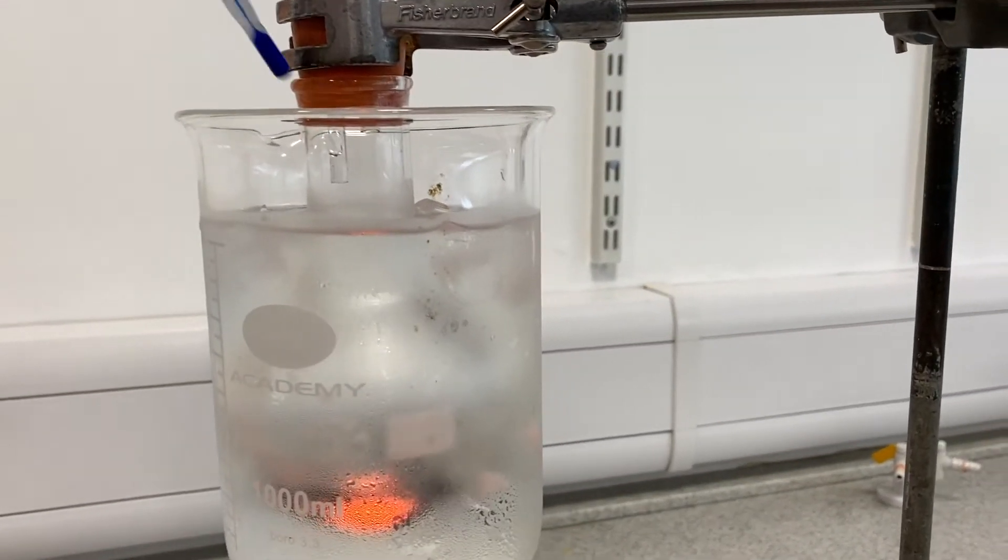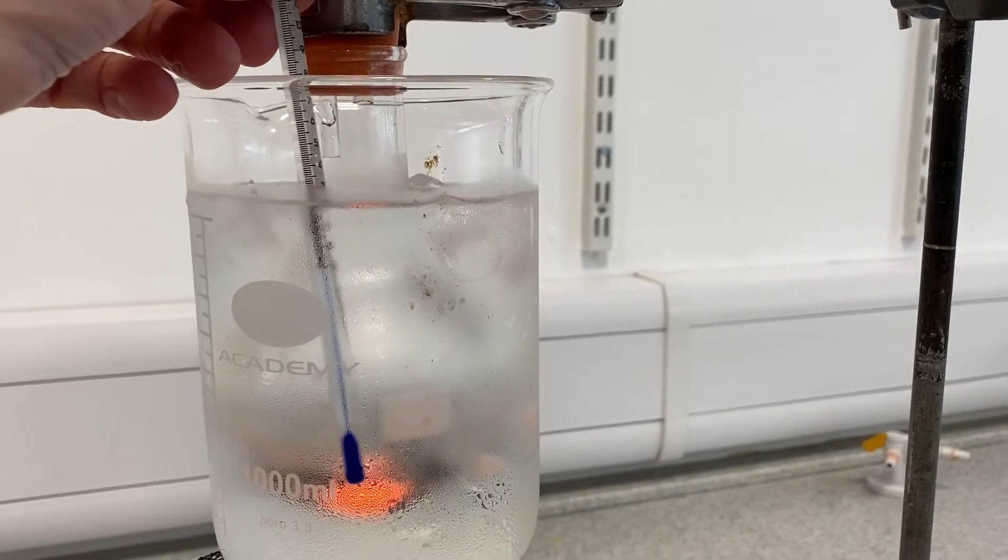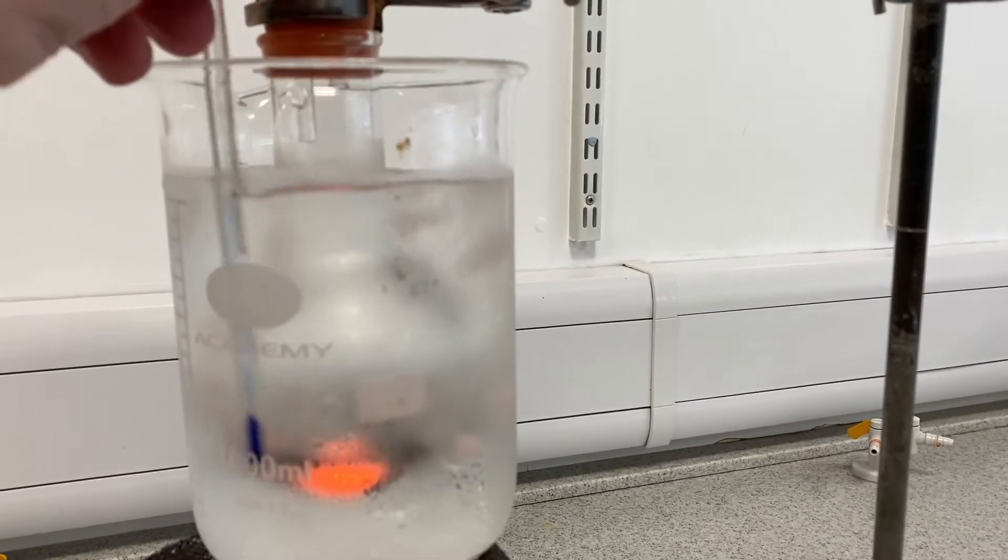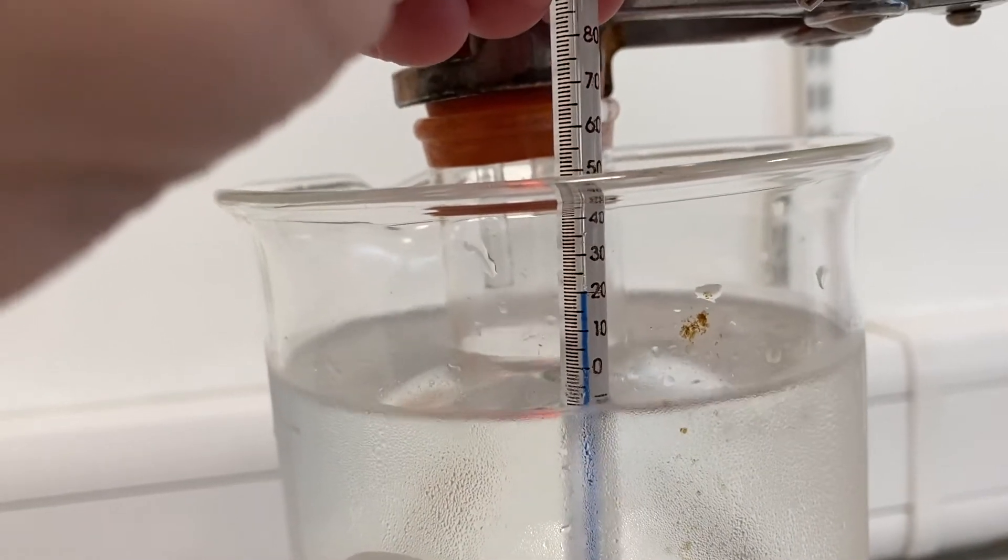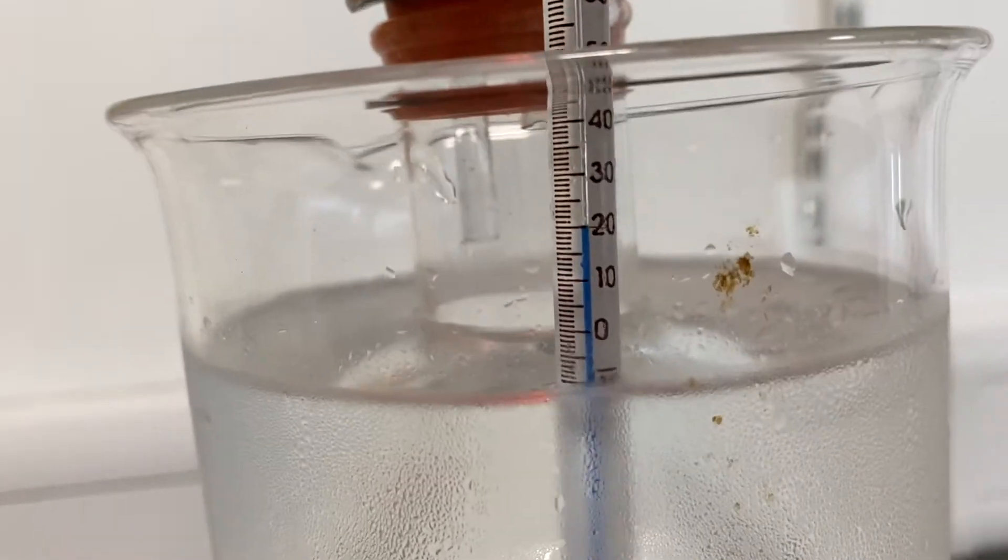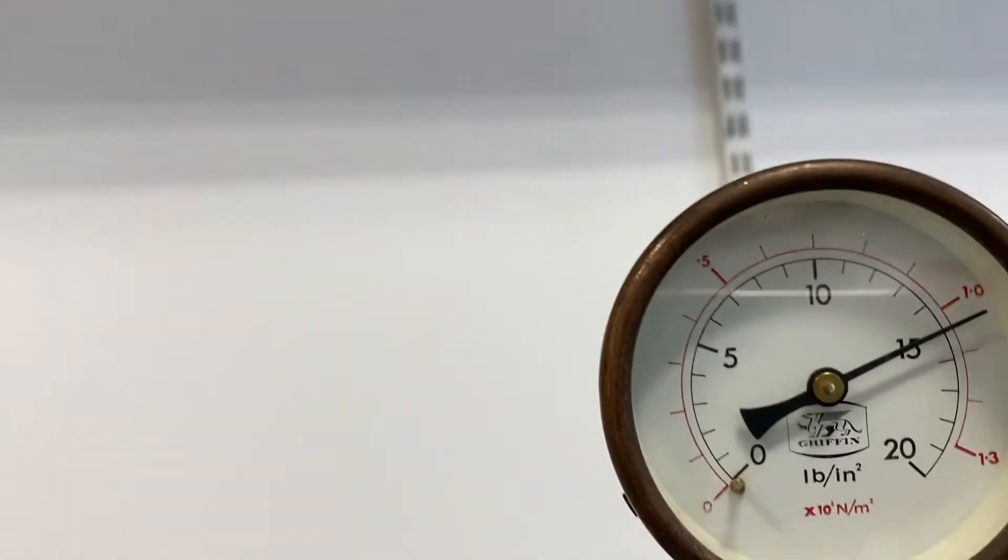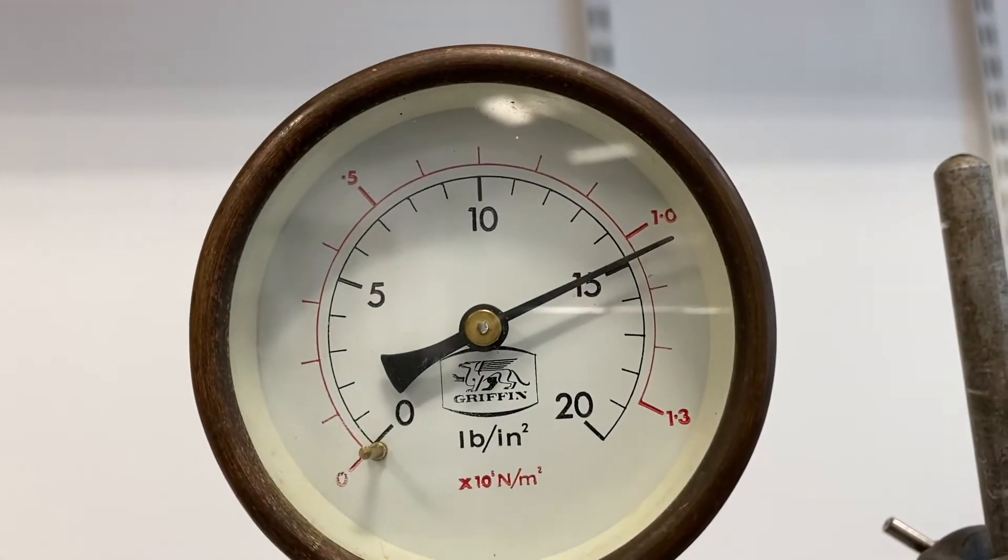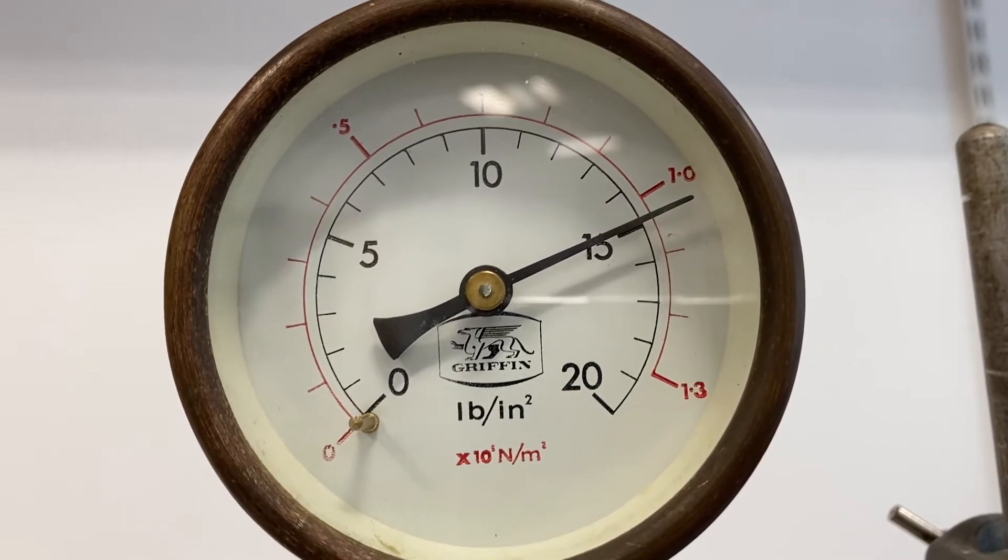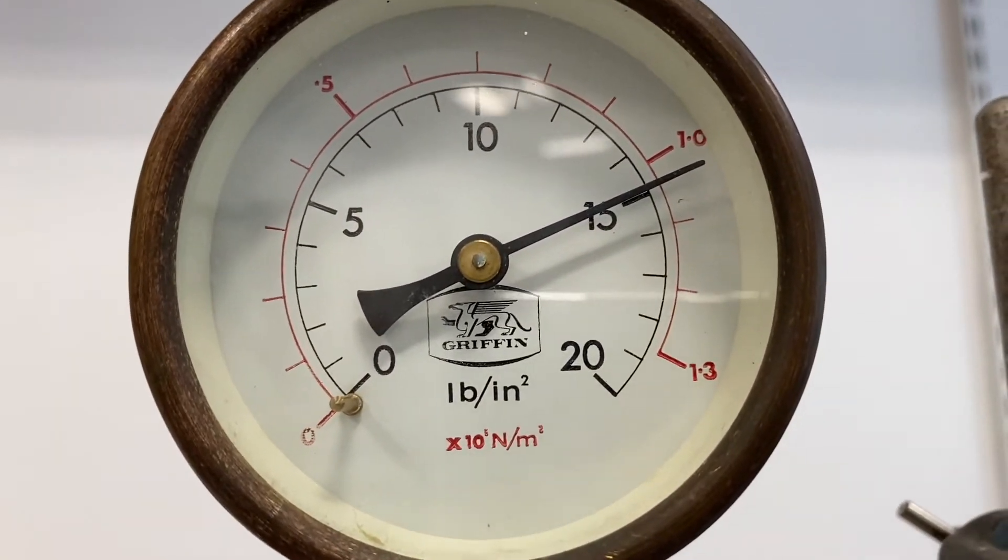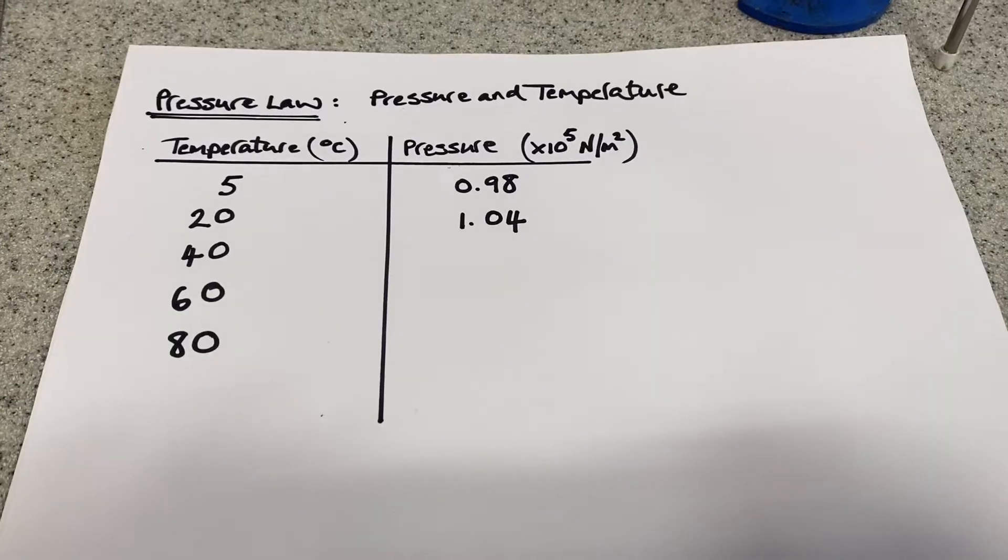Of course it's important that while we do that we give the water a little stir to make sure the heat is dispersed evenly. So 20 degrees, there we have it, 20 degrees in the thermometer and our corresponding pressure is 1.04 times 10 to the 5 newtons per square metre.